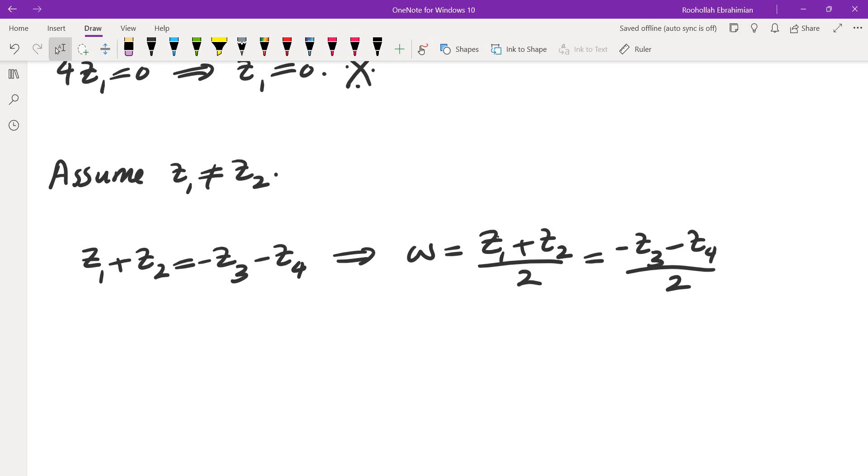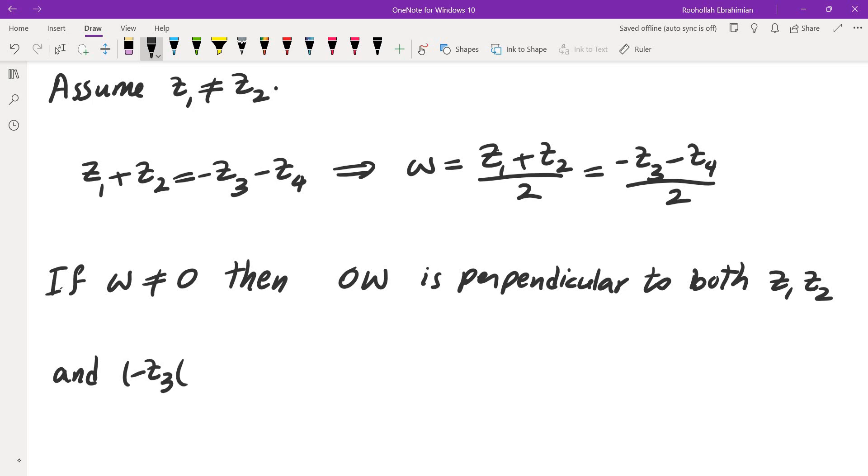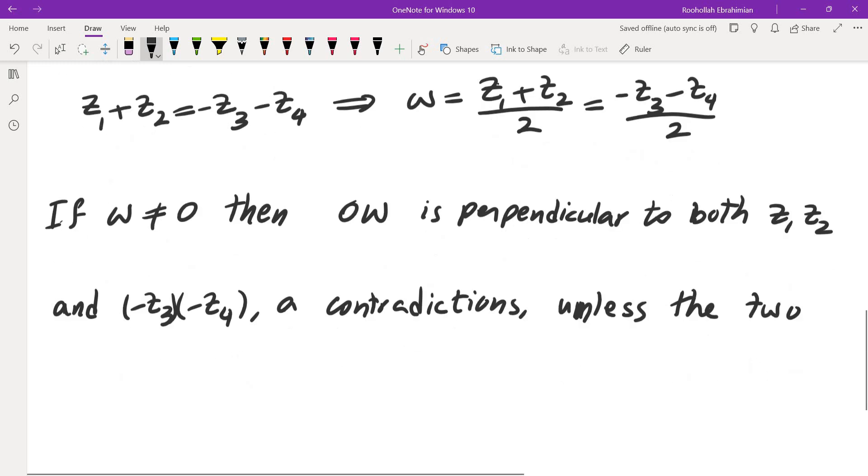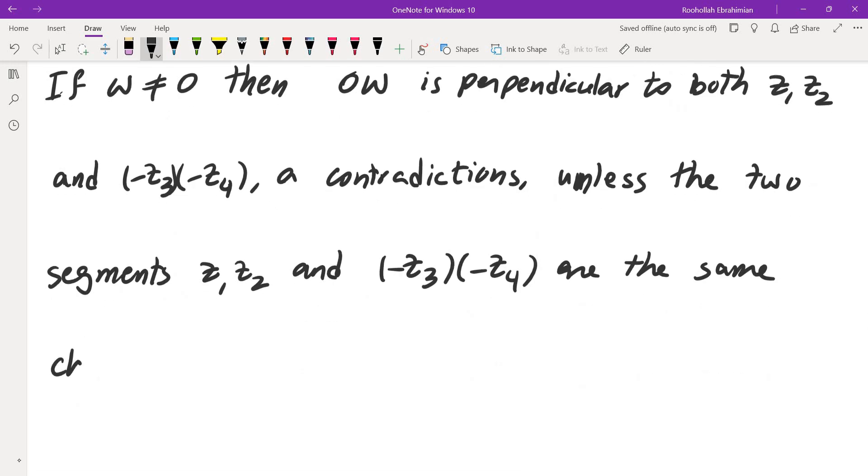Now this midpoint, if it is not the origin, if W isn't the origin, then OW is perpendicular to both z1 z2 and negative z3 negative z4, which is a contradiction, unless the two segments z1 z2 and negative z3 negative z4 are the same. They are the same chord.